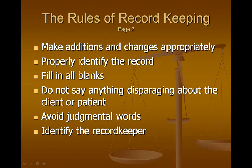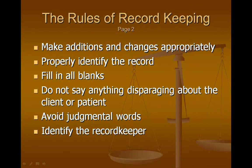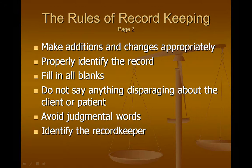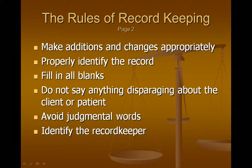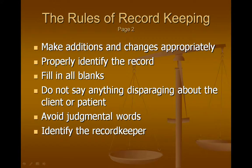Identify the record keeper. A simple practice in paper records: when people are entering entries, they should put their initials and the date in the margin. That identifies when the record was created and who created it. Keep a list somewhere of all the people who have worked for you and made entries in your records. That way, if you're ever asked in a deposition who made a particular entry, you can look quickly and say the initials were JG, so that must have been Jesse Green — rather than saying you remember some guy who worked for you for a few weeks but you can't remember his name. Make sure you identify the record keeper and keep a list of those initials.